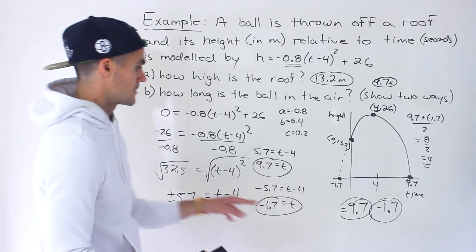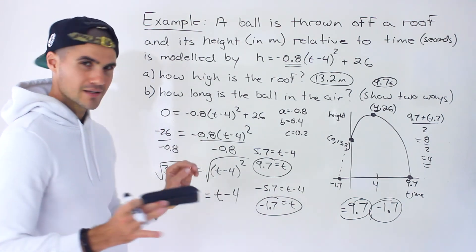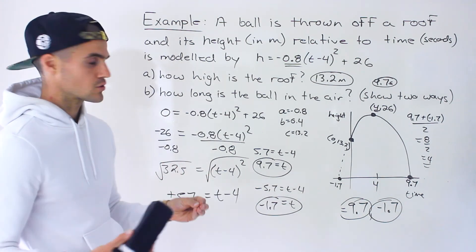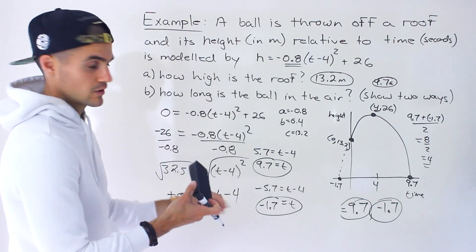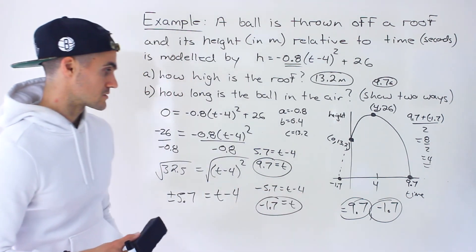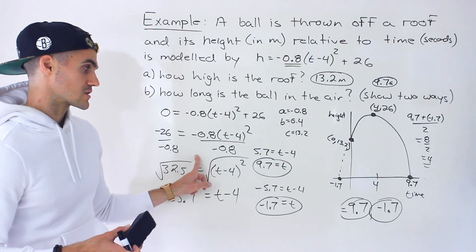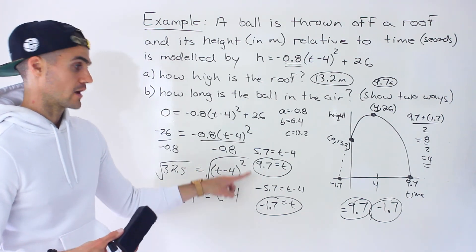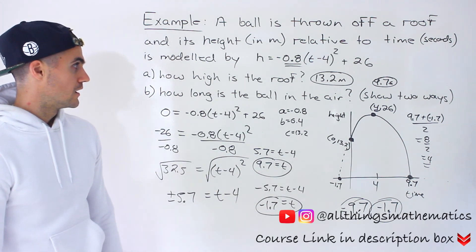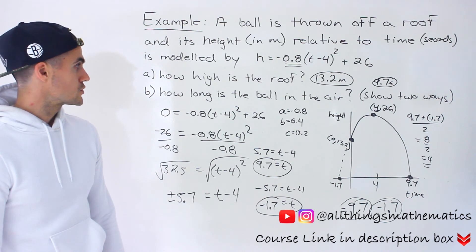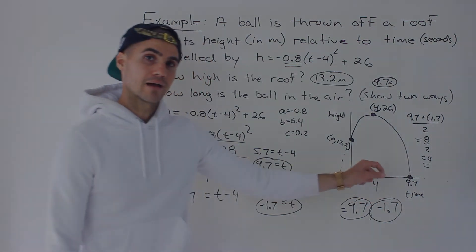So we got the exact same solutions, but doing it more directly. This way I feel like is a little bit quicker, but it's not the most proper way to quote unquote do it. Your teacher may require you for something like this to expand everything, put it through the quadratic formula and get those values. But this is another way you can do it. And maybe if your teacher doesn't allow this way, you could use this way maybe on a test if you have the extra time to quickly check your solutions, making sure that those solutions you got with the formula are the same. So that's it for this question. How high is the roof? 13.2 meters. How long is the ball in the air? 9.7 seconds.